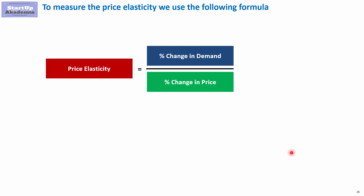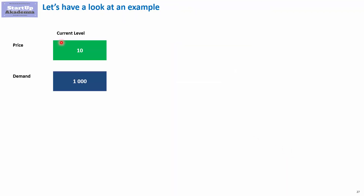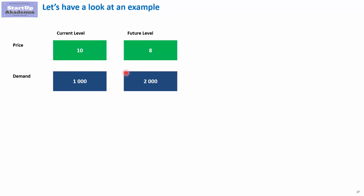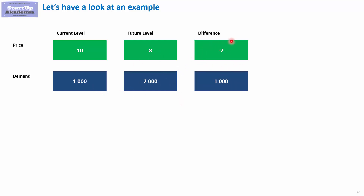So let's have a look at an example that will help us understand this formula. Let's imagine that currently we are selling our product at the price of $10, and the demand is 1000 units. Let's imagine that we have decided to decrease our price from $10 to $8. Due to this change, the customers decided to buy much more — so instead of buying 1000, they actually buy 2000 units. By decreasing the price by $2, we managed to generate a significant increase in demand.